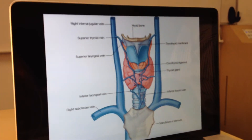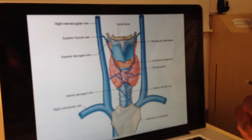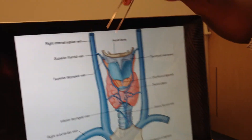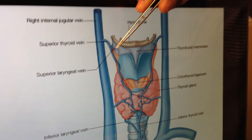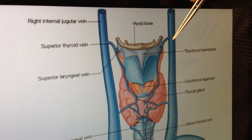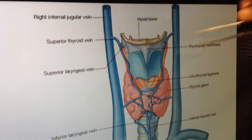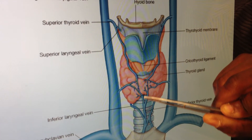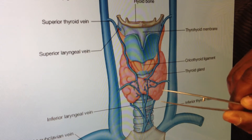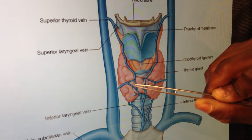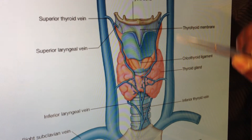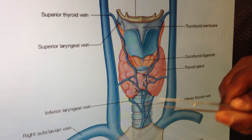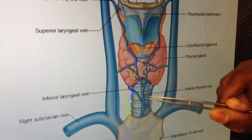Moving on to the venous drainage - remember there are two arteries to supply but three drains to drain away. The three drains are the superior thyroid vein, going into the internal jugular. That's on the right, and this is on the left. And then we have the middle thyroid vein, also heading towards your internal jugular. And then lastly, we've got the inferior laryngeal vein and inferior thyroid vein.